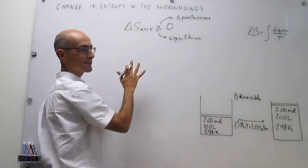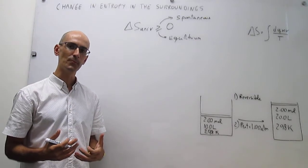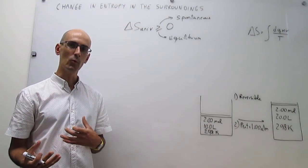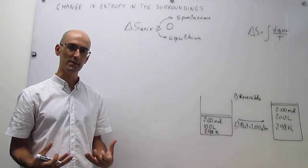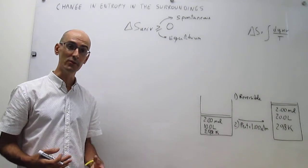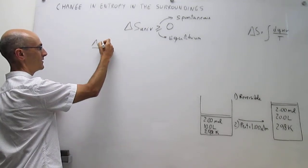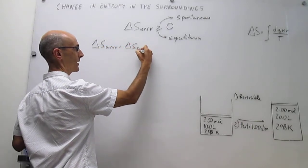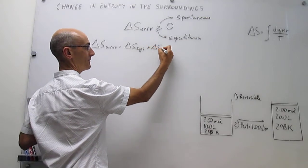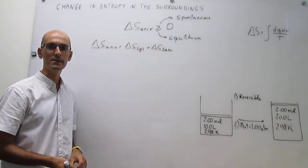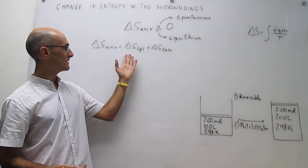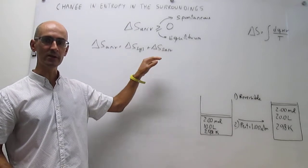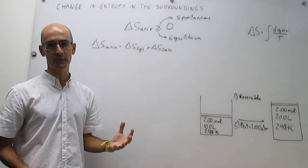In everything we have done until now, we have only calculated the change in entropy in the system, and this is only one of the two ingredients needed to calculate the change in entropy in the universe. Remember that we always divide the entire universe into two components: the system and the surroundings. Everything done in the prior videos in this unit has concerned simply the change in entropy in the system, so here we expand our knowledge to calculate the entropy of the surroundings.